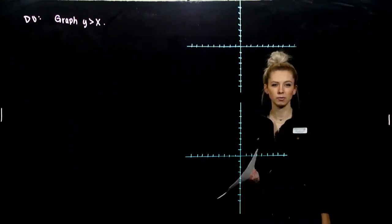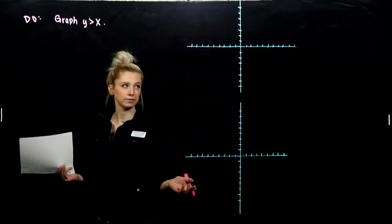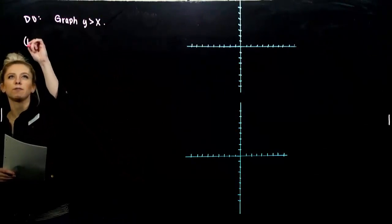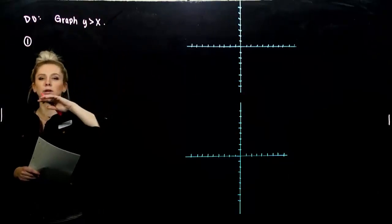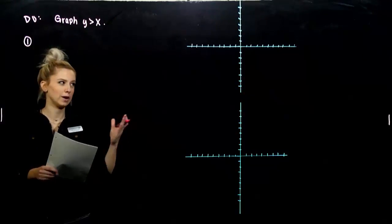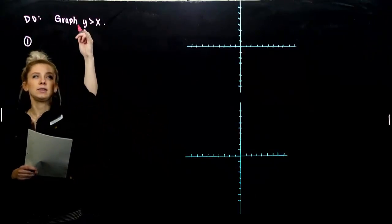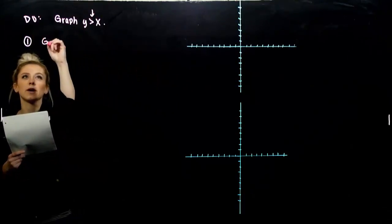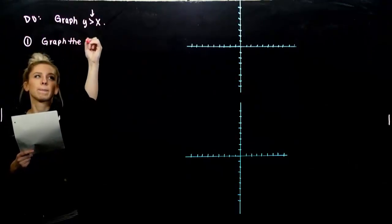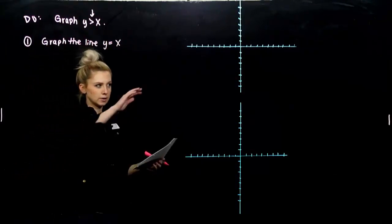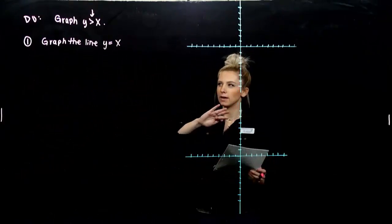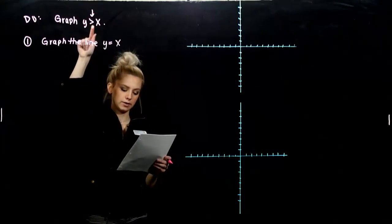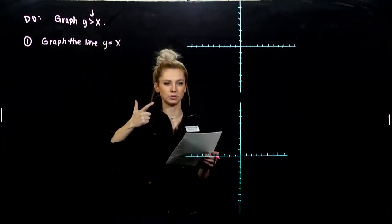Before we start graphing an inequality, we first have to talk about the steps. What do I actually have to do before I start hacking away at the coordinate plane? So the first thing we always want to do with our first example, we're going to graph this inequality. We want to graph the boundary line. So where is the graph bound? And in this case, we always just take the inequality, replace it with equality. So we want to graph the line y equals x. So that'll tell us where the boundary is.